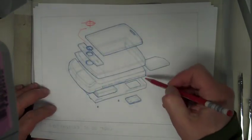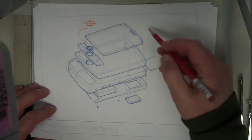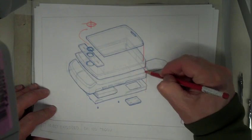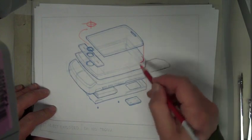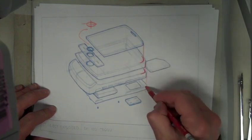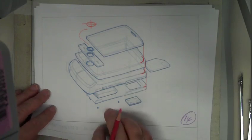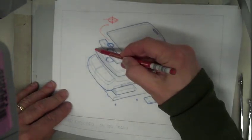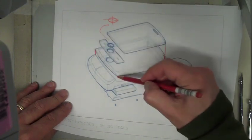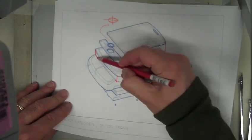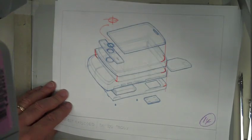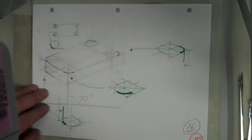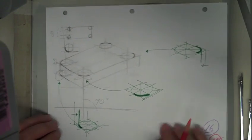The important part is that things match — see how these parts fit one on top of the other nicely. For example, this part fits right there. We're almost done, just some more ellipse practice.